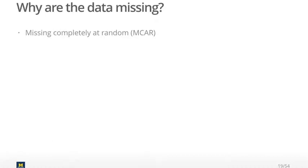The first is missing completely at random, or MCAR. The second reason why data go missing is missing at random, or MAR. Notice the word 'completely' is missing here, which is of interest because MCAR and MAR have very different meanings, even though they look mostly the same.